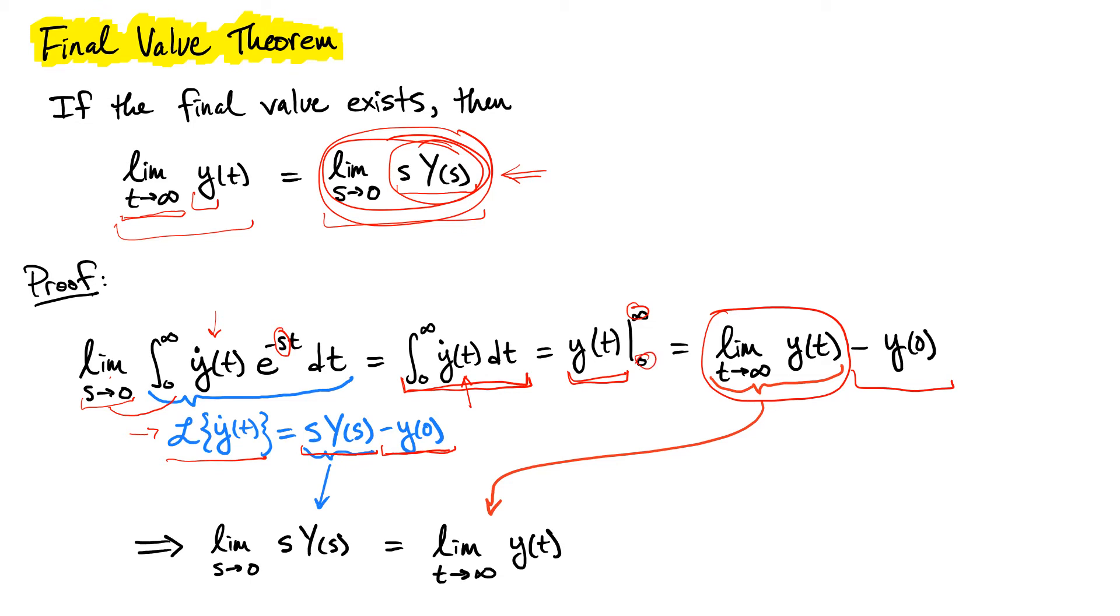Now, the way that we set this up was we had this extra factor of minus y of zero. Once we do some simplification, we get that minus y of zero term as well. What that means is we can just take this piece—these essentially cancel out—and we can take this piece and the limit, the limit of this piece. We set these guys equal to each other, and that gives us the result, this theorem that we presented here.